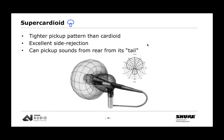The supercardioid is a bit narrower than the cardioid, so you need to be more on axis when using it. It has better side rejection — at 120 degrees on each side you have great rejection. However, the narrower front pattern creates a rear lobe or tail, which can actually pick up sounds from behind the microphone. In a live amplification environment with a speaker behind it, that rear lobe could cause feedback.